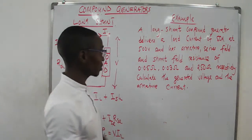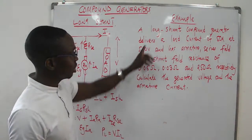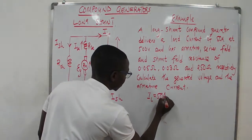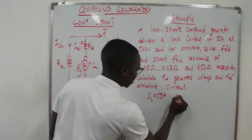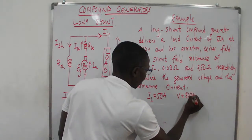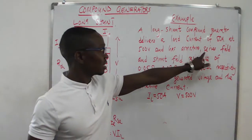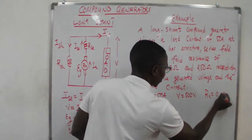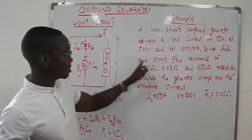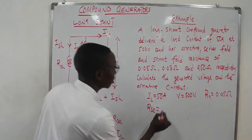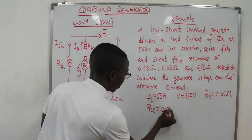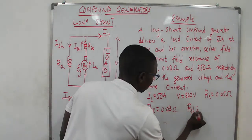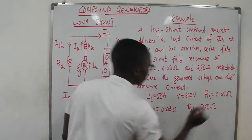With that said, let's look at an example. In this example, you have a long shunt compound generator delivering a load current of 50 amps at V equal to 500 volts. The armature resistance RA is 0.05 ohms, the series resistance RSE is 0.05 ohms, and the shunt field resistance RSH is 250 ohms. We need to calculate the generated voltage and the armature current.